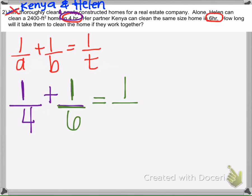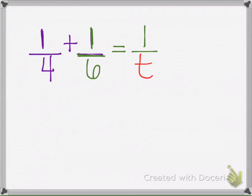So we want to know how long it will take them together. We need to go ahead and solve this equation. So we need to find a common denominator. We need to think of a number that four and six both multiply to.